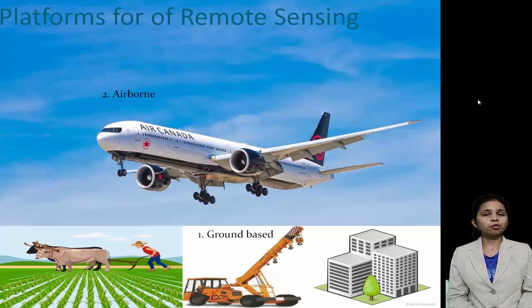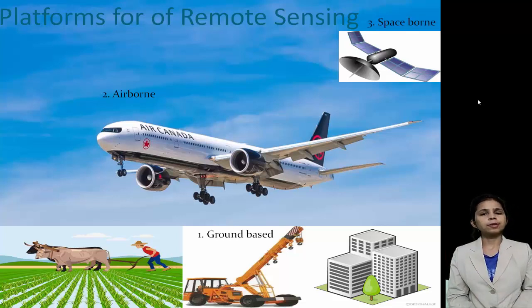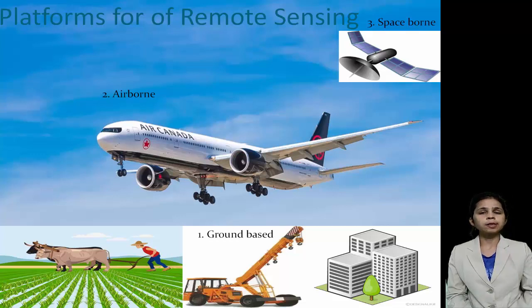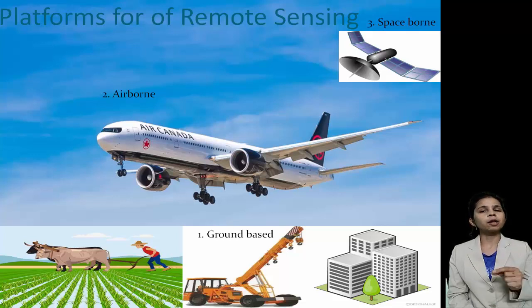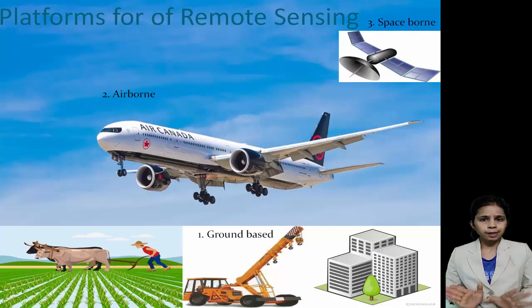If we want to study different cities, different parts of India, or different parts of the world, then the remote sensor should be placed on a satellite. This is known as satellite or spaceborne platform remote sensing. In spaceborne remote sensing, the remote sensors are placed at a height of about 100 kilometers to 36,000 kilometers from the earth's surface, on rockets, satellites, and spacecraft. The satellites used for spaceborne remote sensing are known as remote sensing satellites. Since the sensor is placed on a satellite, you can have a view of a large area — the whole earth can be monitored using satellites.